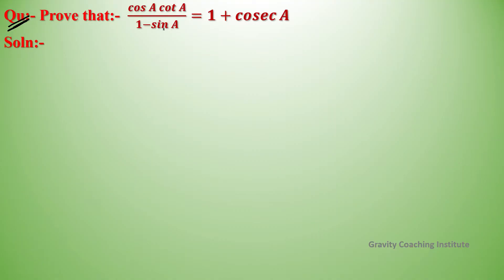Question: Prove that cos A into cot A upon 1 minus sin A equals 1 plus cosec A. Here, LHS is equal to cos A into cot A upon 1 minus sin A.